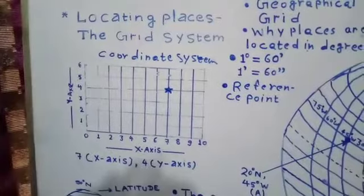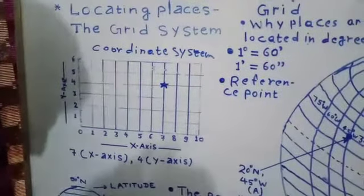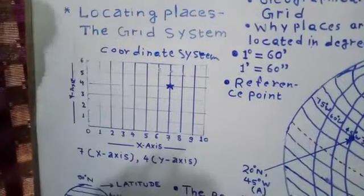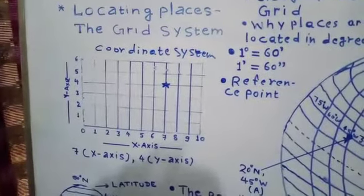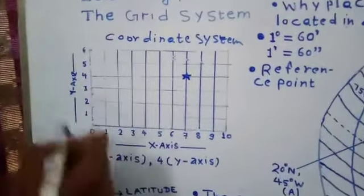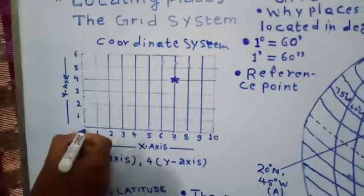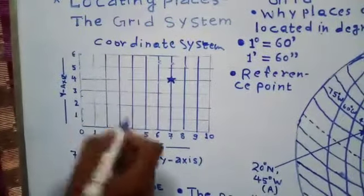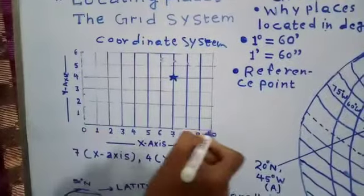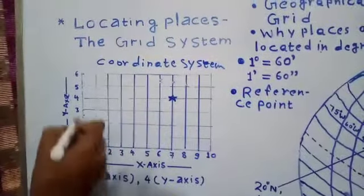What is a coordinate system? It is a simple geometric relationship between the perpendicular axes. You can see there are two axes — the X axis and the Y axis.